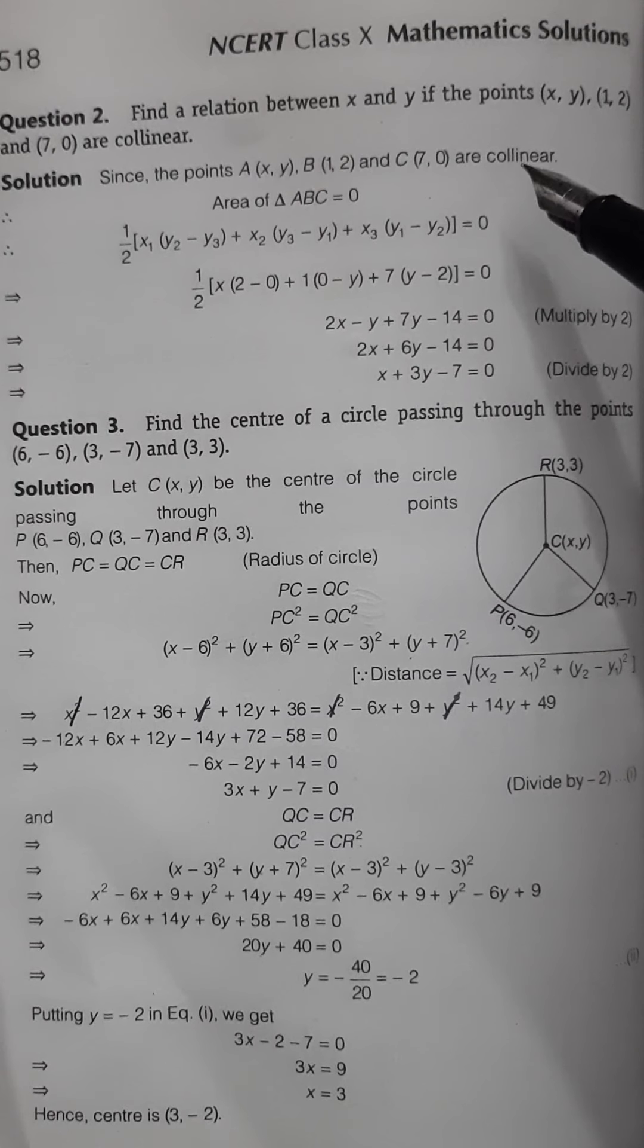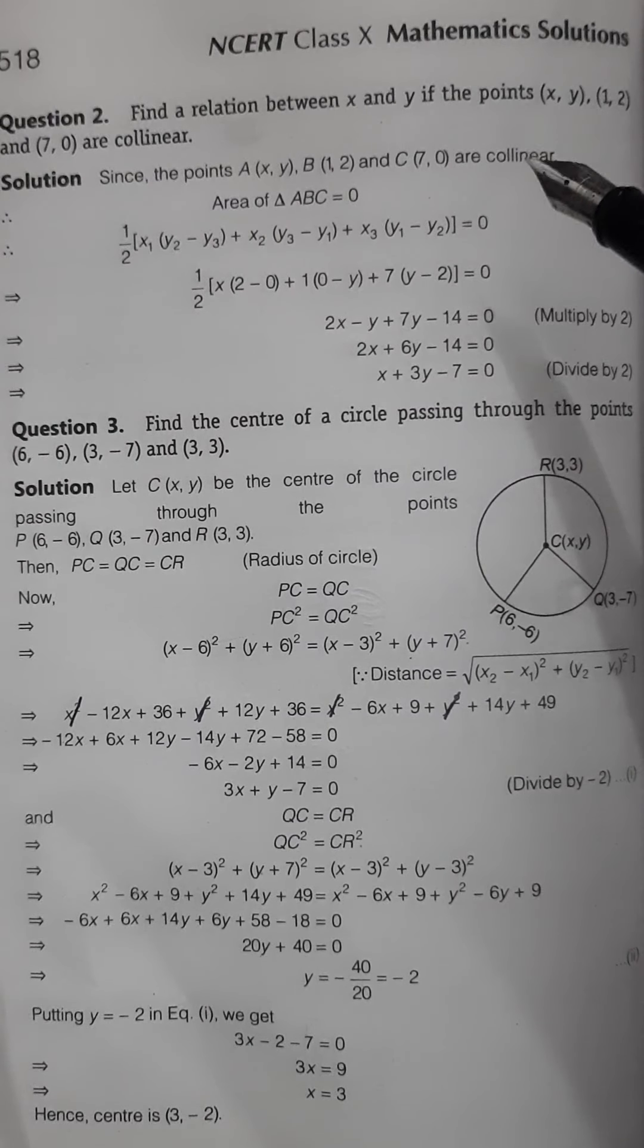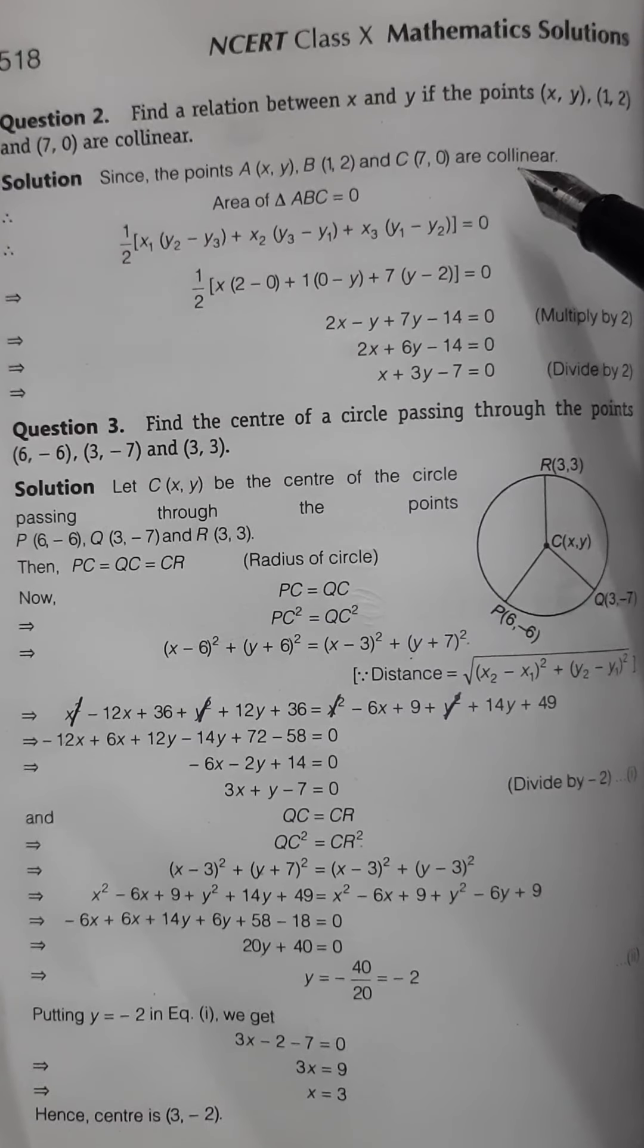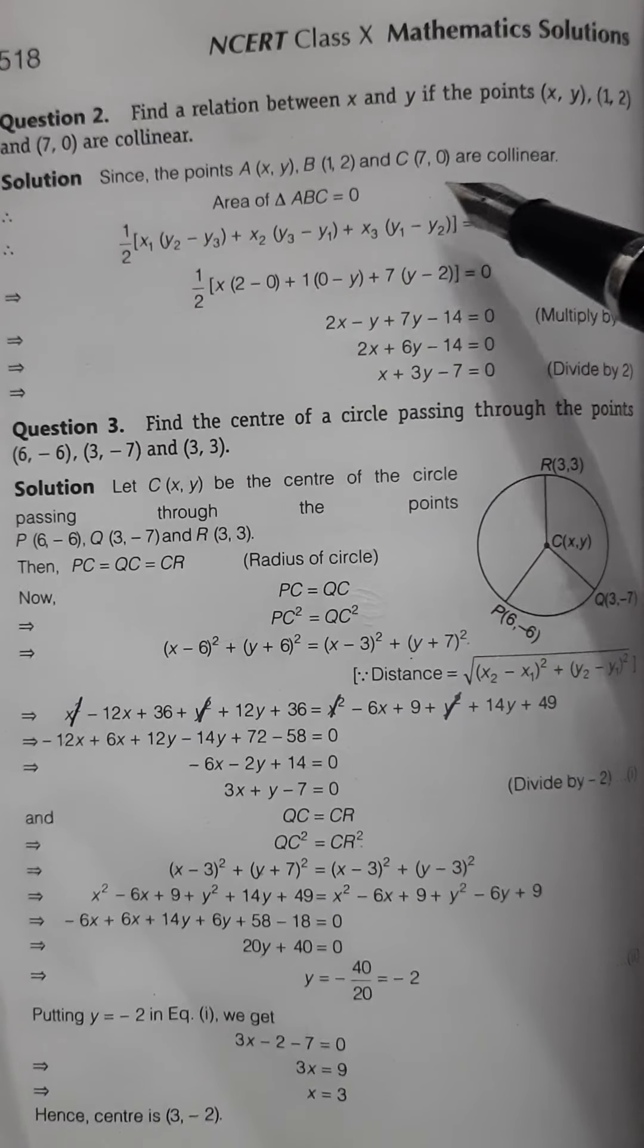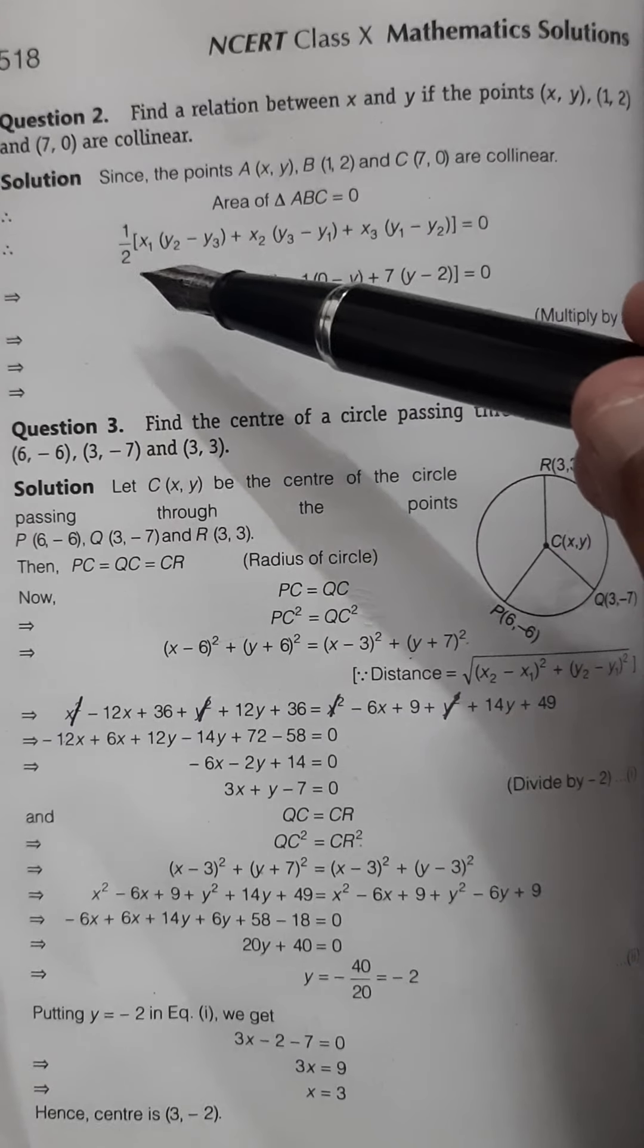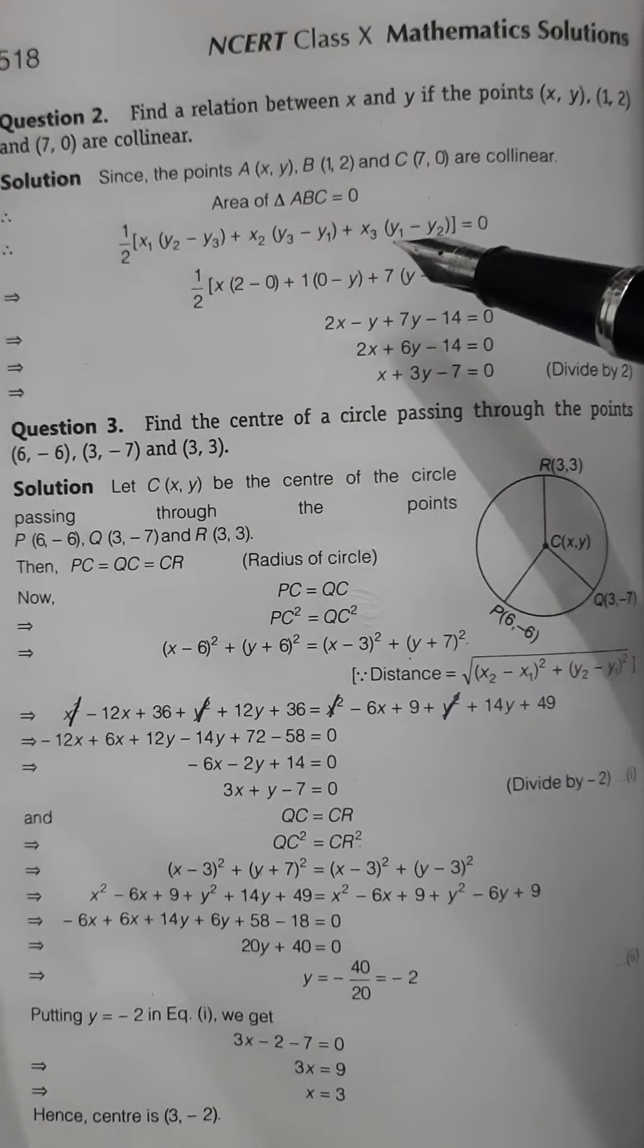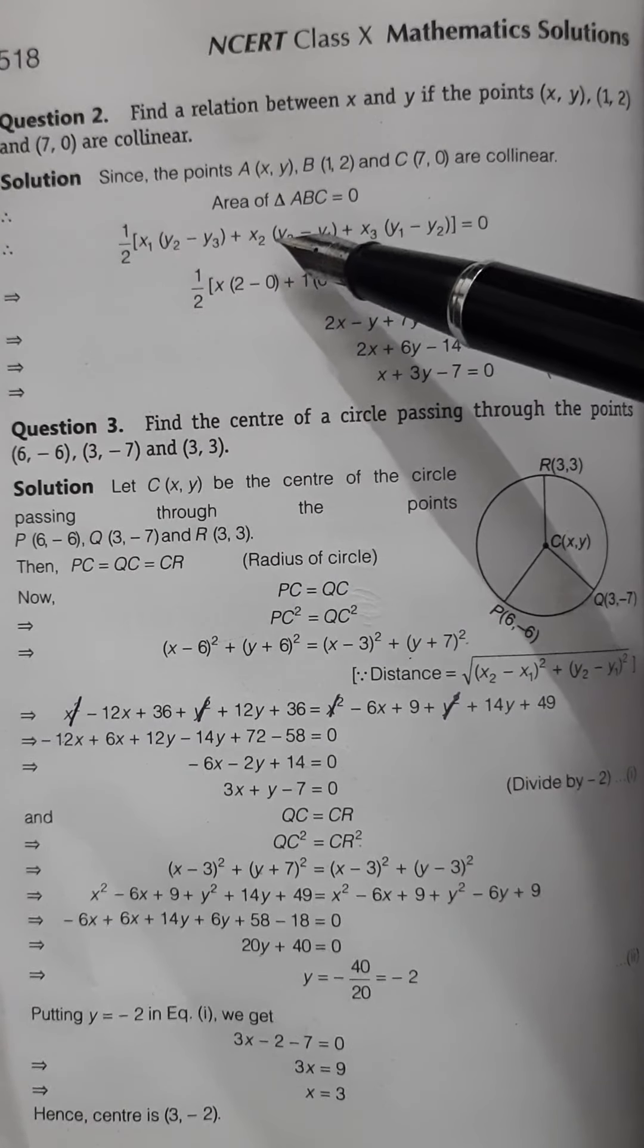In the last exercise we did this formula for area, and I told you that whenever area is 0, that means points are collinear. So that's what we're going to do here—equate the area to 0 and use the area of triangle formula.